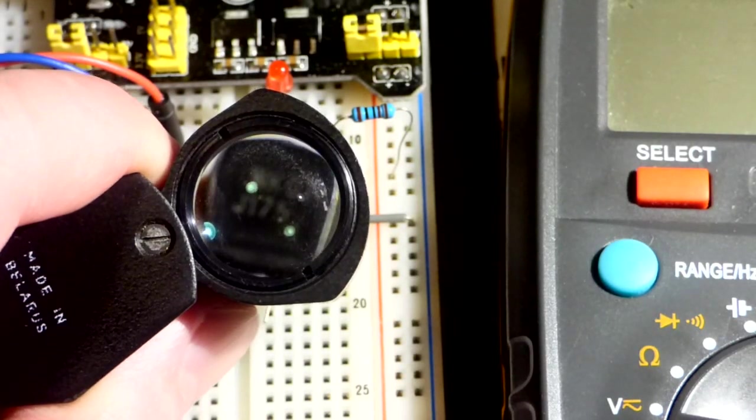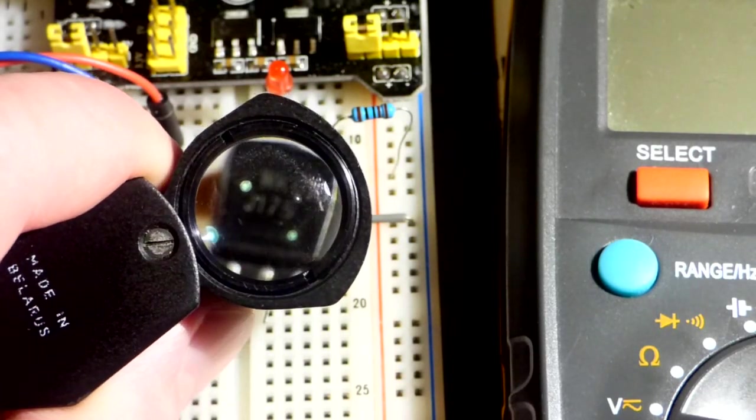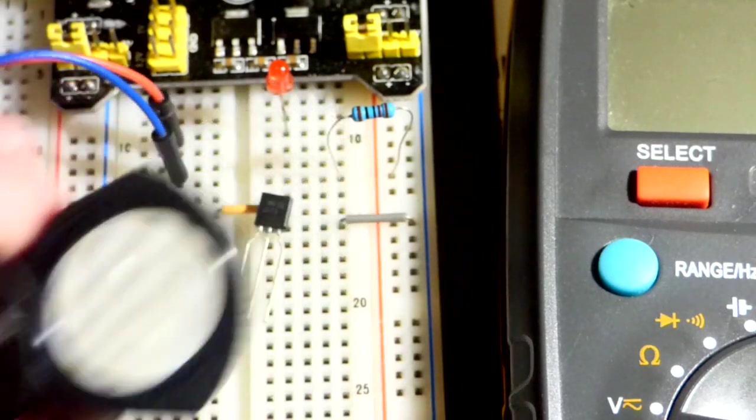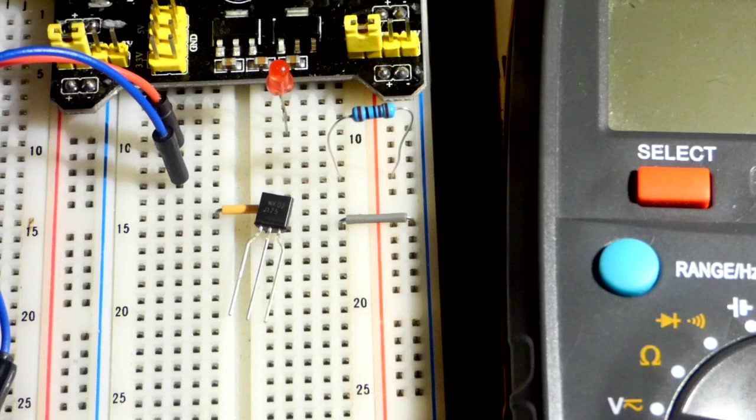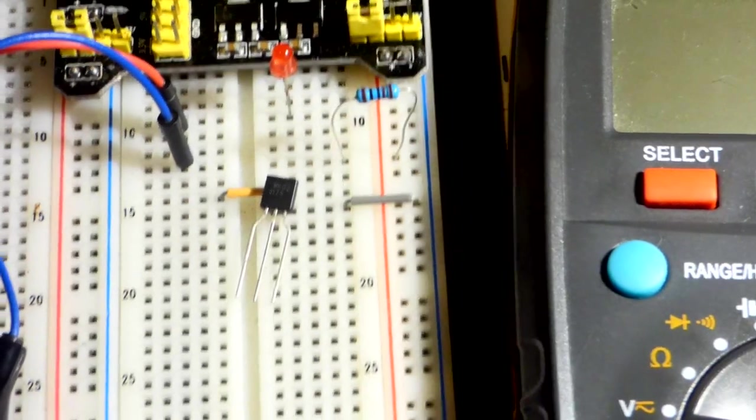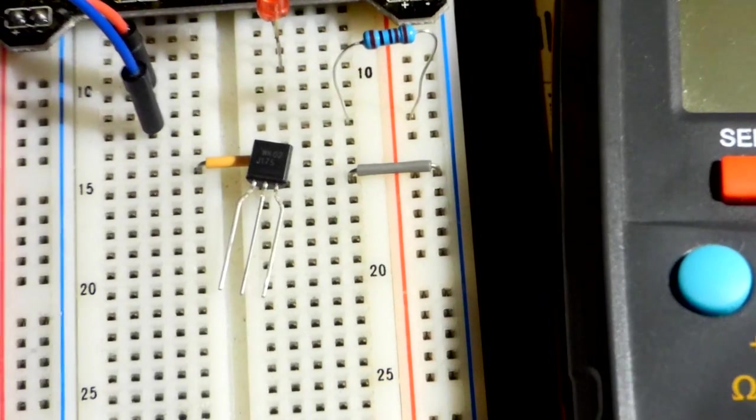In this video, we're going to look at a new component I got. The number's not showing up terribly well, but that is J175. So this is a P-channel JFET transistor.